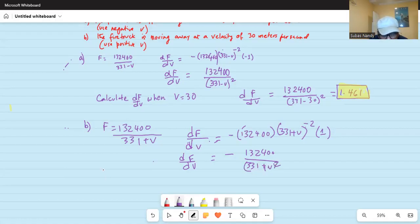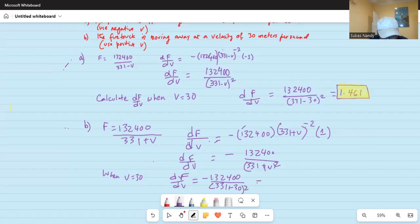So when V is equal to 30, df by dv is equal to minus 132,400 divided by 331 plus 30 square, which is equal to minus 132,400 divided by 331 plus 30 in parenthesis squared is equal to 1.016.